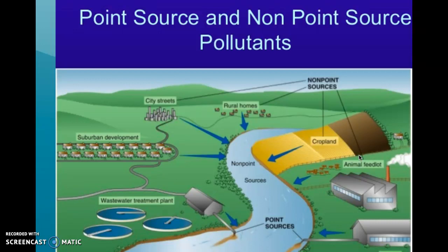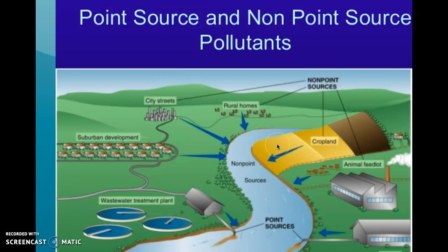For example, on this cropland over here, you have fertilizers being put down. When we get a heavy enough rain, the fertilizers will travel down and be pushed into the water. But this doesn't happen with just one cropland — it happens with all of them. So it's hard to say which cropland is putting more fertilizer in than others. It's very difficult to figure out.